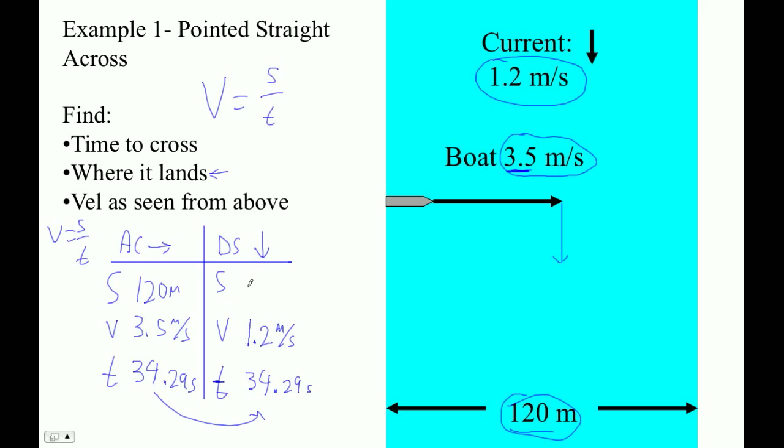So S is 1.2 times 34.29, 1.2 meters per second times 34.29 seconds. That's 41.148, I'll say 41.5 meters.